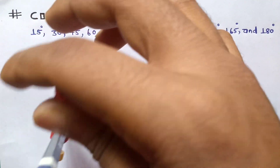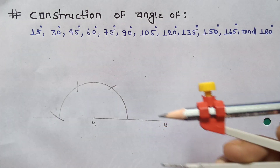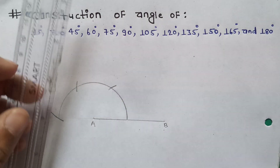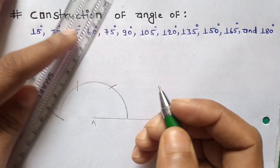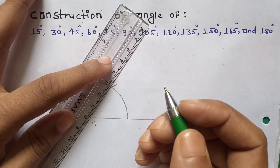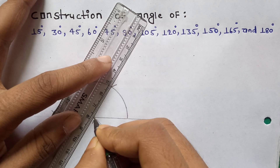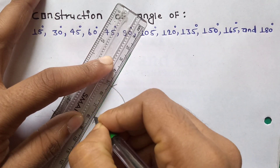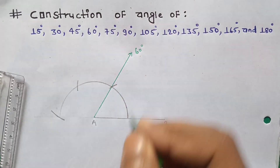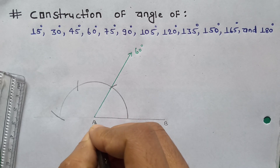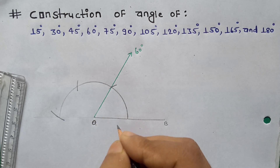Without moving your compass, just cut it, and join the line — or you can pass the line from point A. Just name it O, or A, whatever you wish. I pass this line. It will be 60 degrees. I am going to give the name A to O. O is the center of the semicircle.